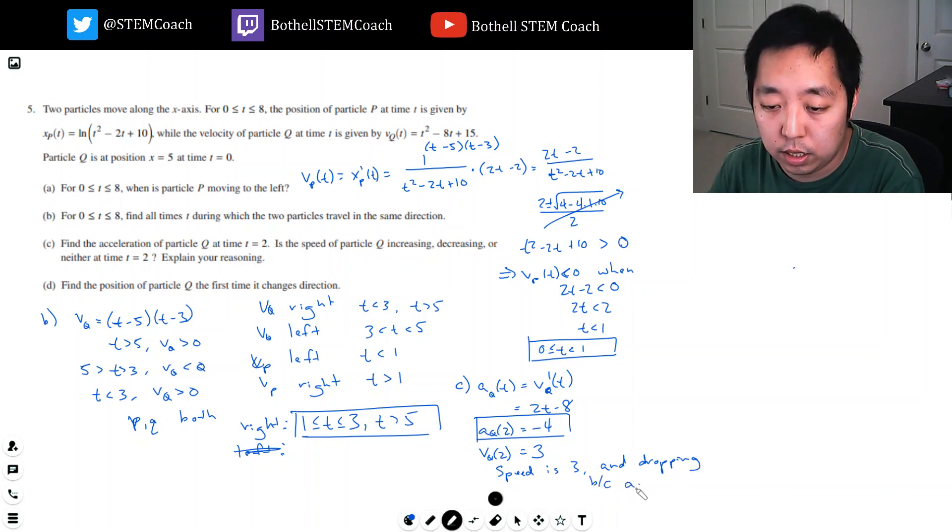Because aq of t at 2... Actually, I'll say velocity here. Hence the speed is decreasing.